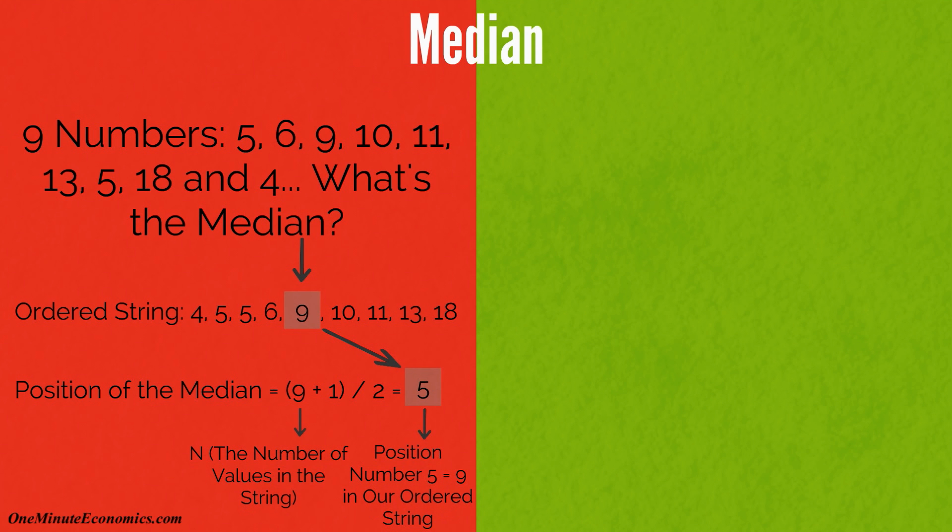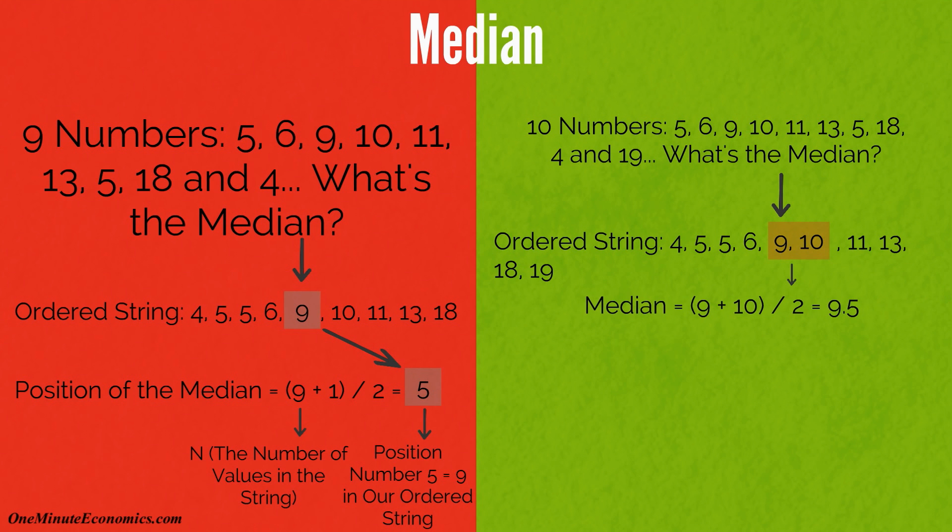If it's an even string, there are 2 numbers in the middle and the median is their sum divided by 2.